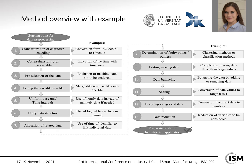Step nine is editing missing data — for example, you can complete the missing data through average values, if this is helpful to your application. Step ten is data balancing — for example, balancing the data by adding or removing data. If you have two conditions and one condition has a lot of data and the other does not, you can either add some data or remove data from the condition which has more. Step eleven is scaling — for example, converting the data values to a range of zero to one, if you need to scale the data.